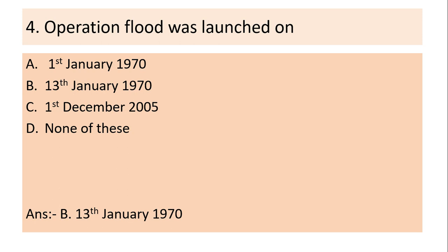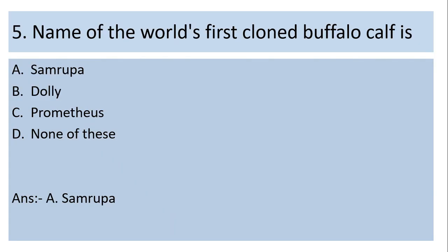Answer is (b) 13th January 1970. Fifth question: The name of the world's first cloned buffalo calf is — (a) Samruba, (b) Dolly, (c) Prometheus, (d) none of these. Answer is (a) Samruba. Note: The first cloned sheep is known as Dolly, and the first cloned horse is known as Prometheus.